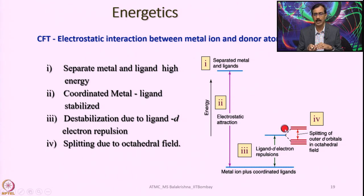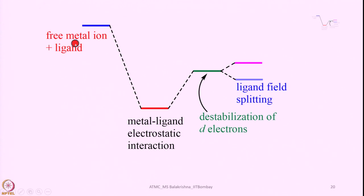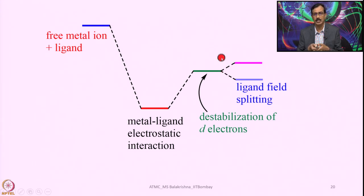A typical splitting pattern for an octahedral complex shows T2g as triply degenerate and Eg as doubly degenerate. Eg comprises dz² and dx²−y², while T2g comprises dxz, dyz, and dxy orbitals. The splitting varies with various ligand fields — it is different for octahedral, square planar, tetrahedral, trigonal bipyramidal, and other geometries. One by one we shall look into each of those.